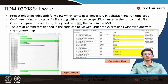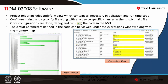Once you are through with the sysconfig, it pulls in the example code into the main dot C file. The project folder includes the TTPL PFC underscore main dot C, which contains all the necessary initialization and runtime code. You can configure the main dot C and sysconfig file along with any device-specific changes. Whatever project TI has provided is based on F28004X; you can use any other device and incorporate device-specific changes in the HAL dot C file.